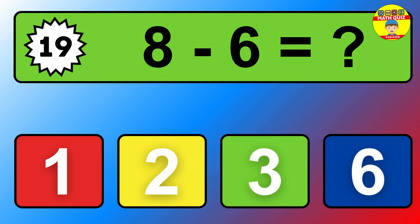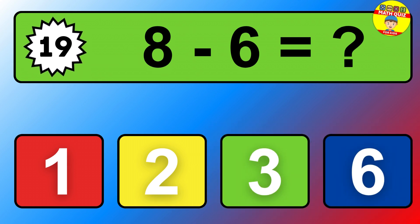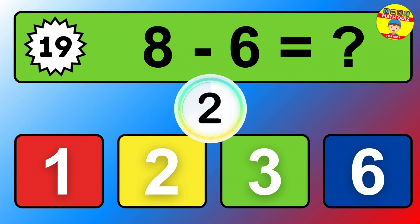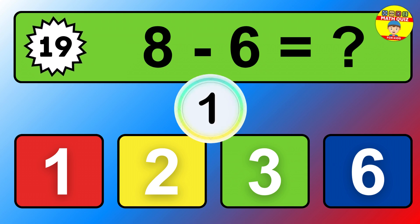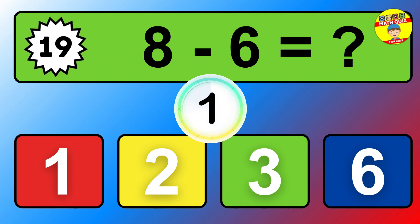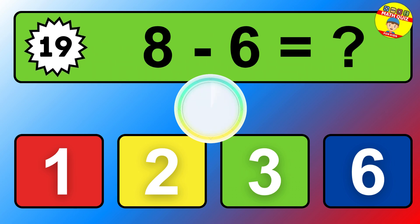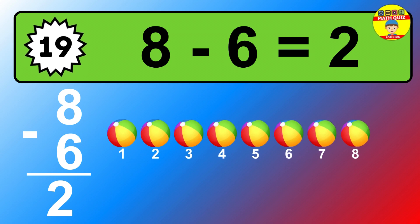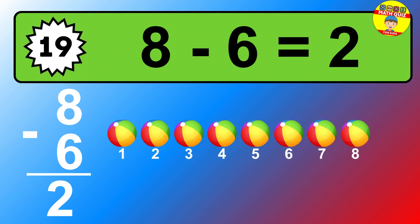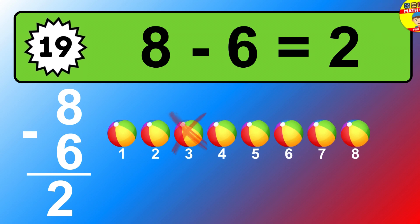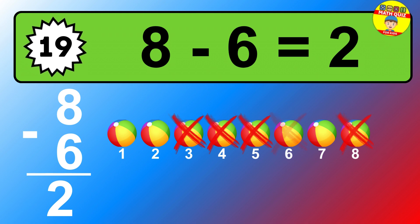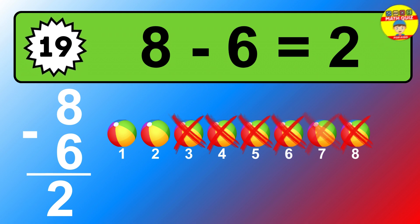Question nineteen: eight minus six equals what? So the answer is eight minus six is two. Let's count it. One, two.